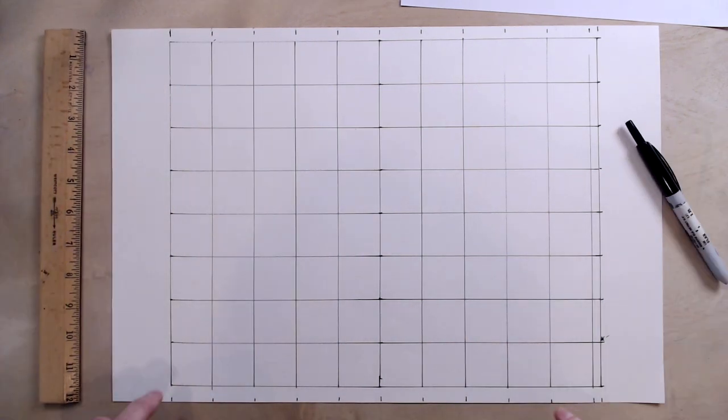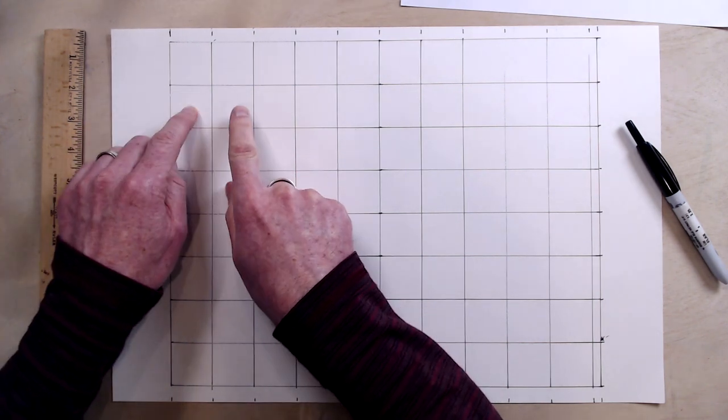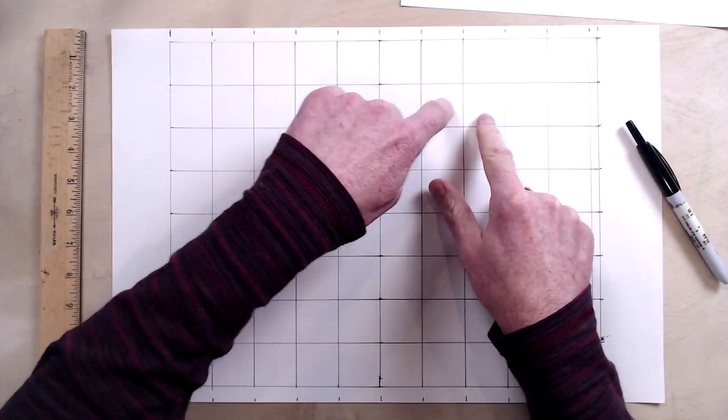So there you have it. You have one, two, three, four, five, six, seven, eight squares. One, two, three, four, five, six, seven, eight, nine, 10 squares.